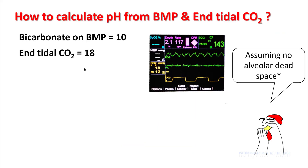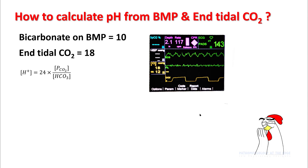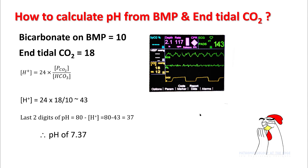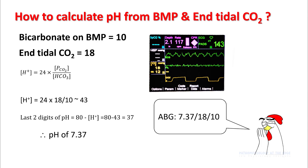Let's assume your patient has no alveolar dead space and the capnogram has a plateau phase with an end-tidal CO2 of 18 — this possibly represents an approximation to PaCO2. Your bicarb on BMP is 10. Using the modified Henderson equation, the hydrogen ion concentration comes out to be 43, and subtracting that from 80 gives you the last 2 digits of your pH — that comes out to be 7.37. So your ABG should read pH 7.37, PaCO2 of 18, and bicarb of 10.